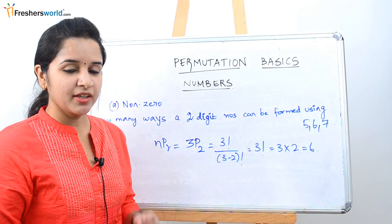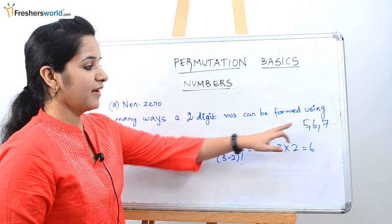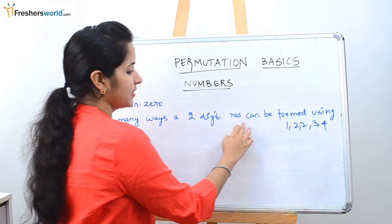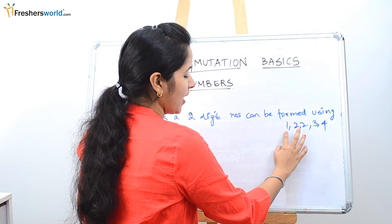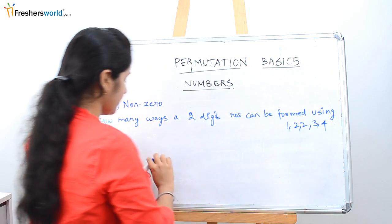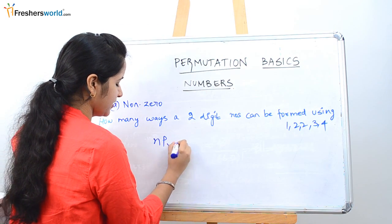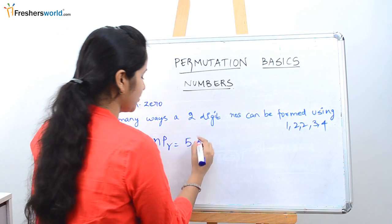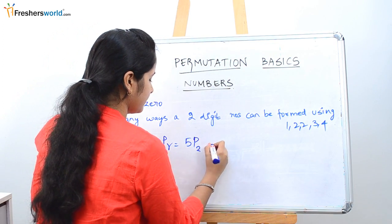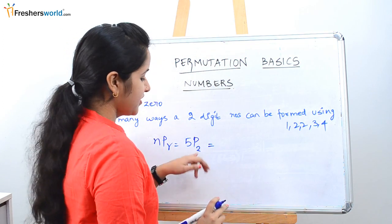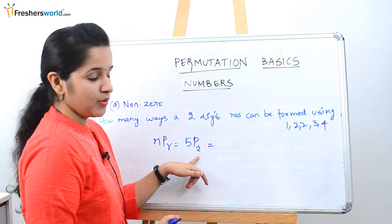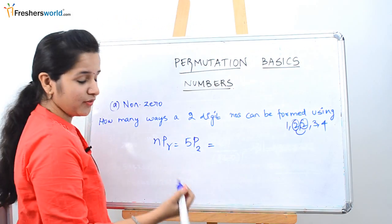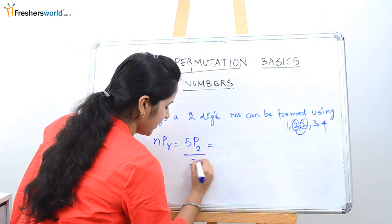The next type of problem involves repeated numbers. Consider this example: how many ways can a two-digit number be formed using 1, 2, 2, 3, 4? The formula is NPR. With 5 numbers given, N is 5, and we need to form 2-digit numbers, so we write 5P2. The catch here is that 2 is repeated twice, so we divide by 2 factorial.